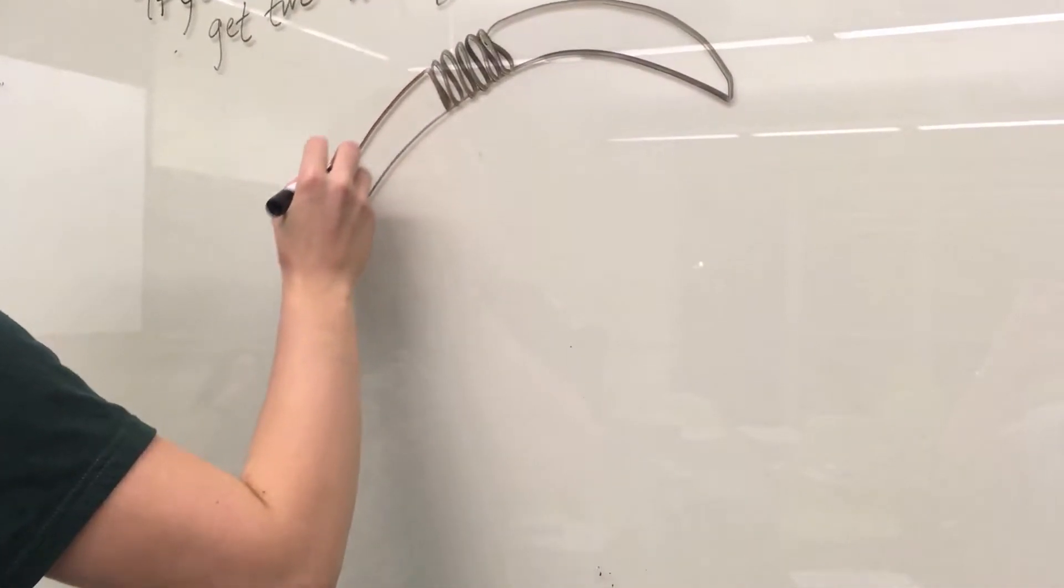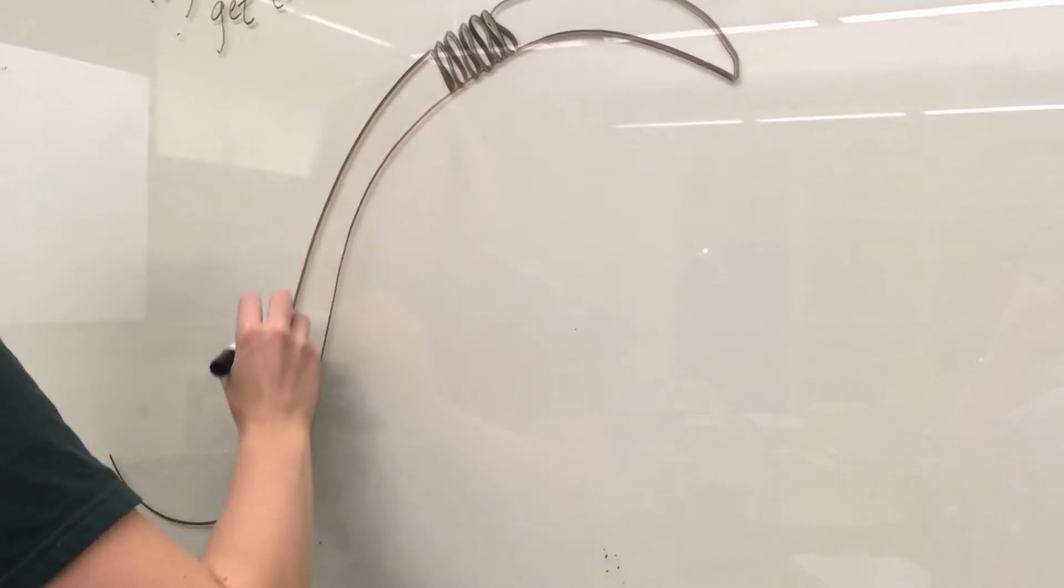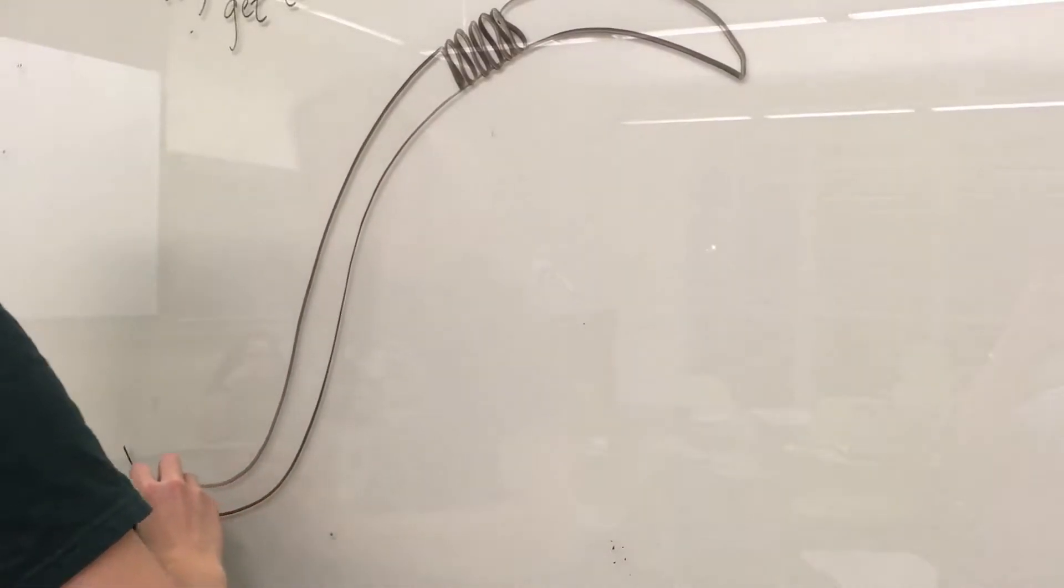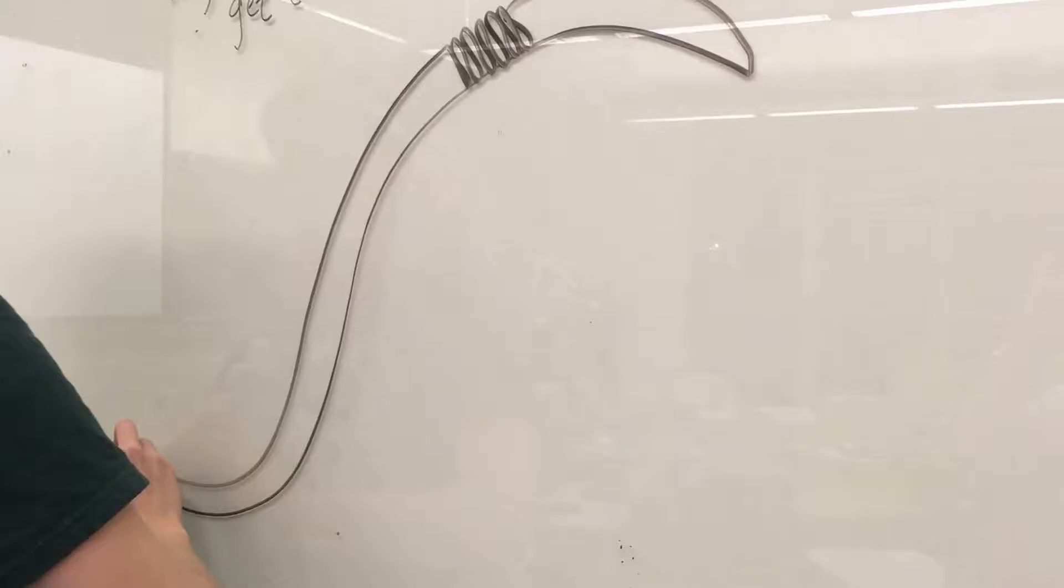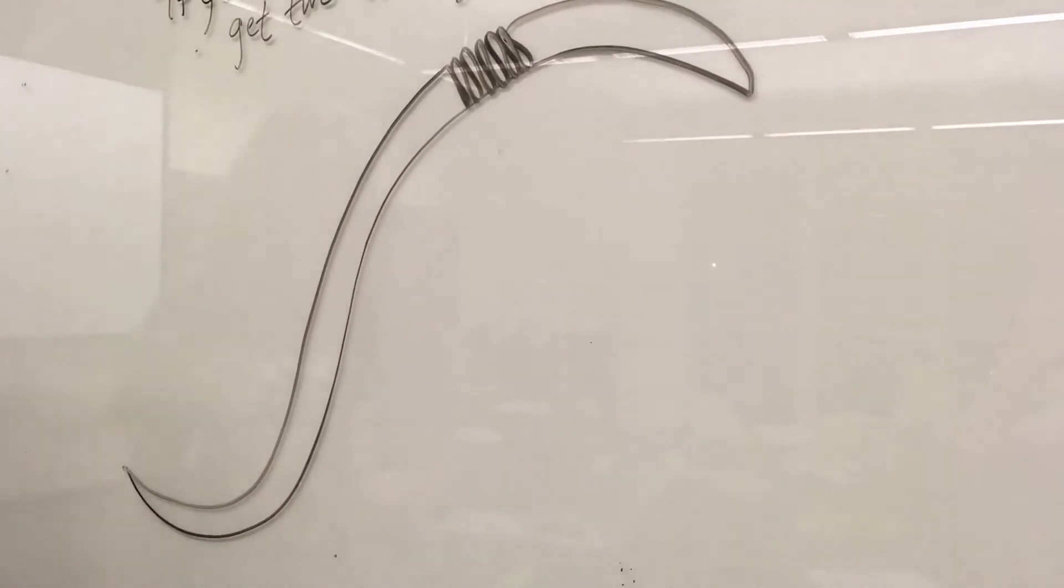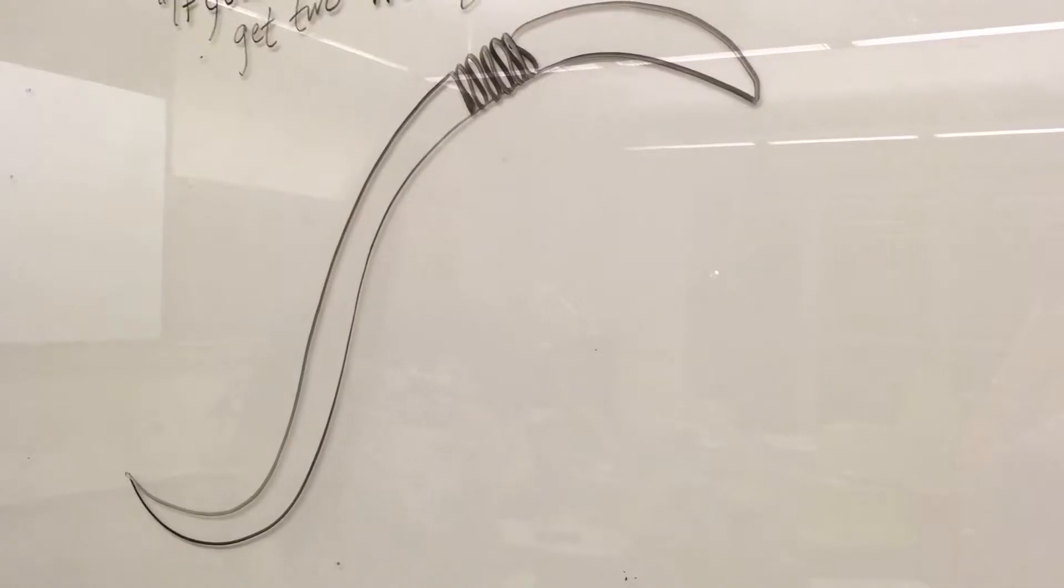If the worm is severed far enough below the clitellum, it will usually survive and grow a new tail. Although the replacement tail may be slightly shorter and paler than the original, the severed tail portion isn't able to survive on its own. So rather than two new worms, you end up with one slightly shorter worm plus a dead bit of a worm.